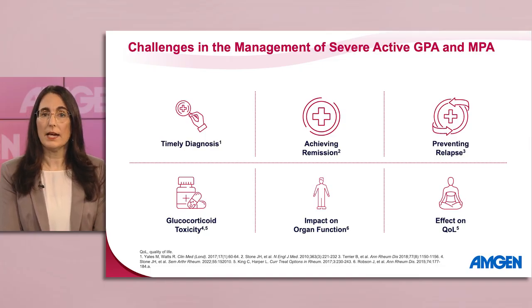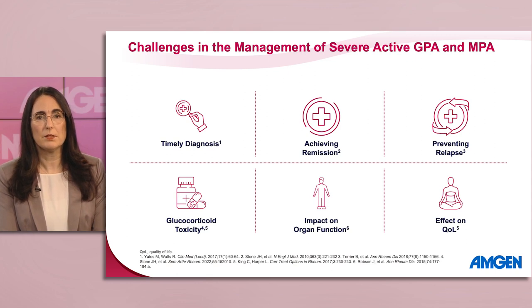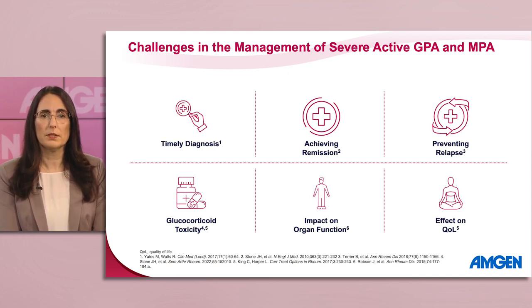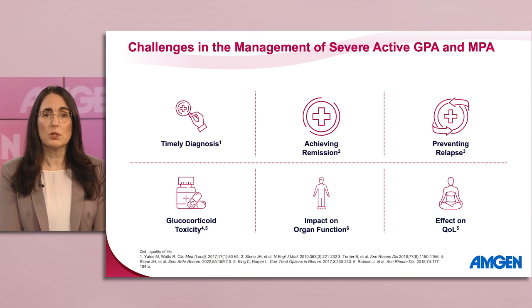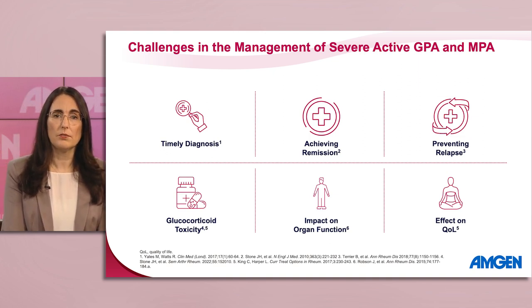If this fails, glucocorticoids may be required for disease control during maintenance therapy alongside other immunosuppressants. Note that multiple disease, treatment, and patient-related factors that alter the risk of relapse are weighed when determining the optimal duration of therapy to maintain remission. Ultimately, treatment decisions for MPA and GPA are based on disease activity, damage, prognosis, and patient quality of life.